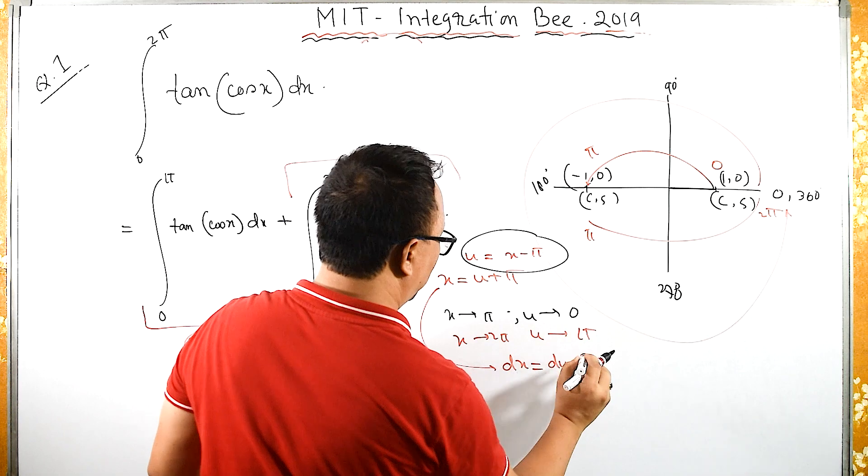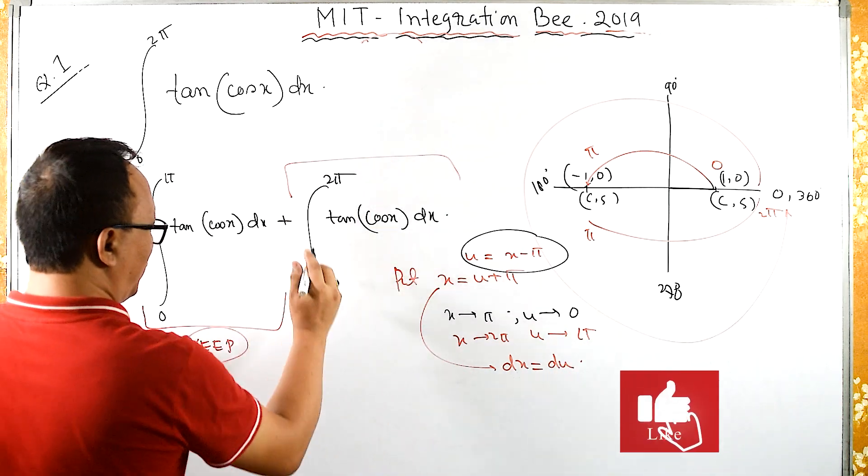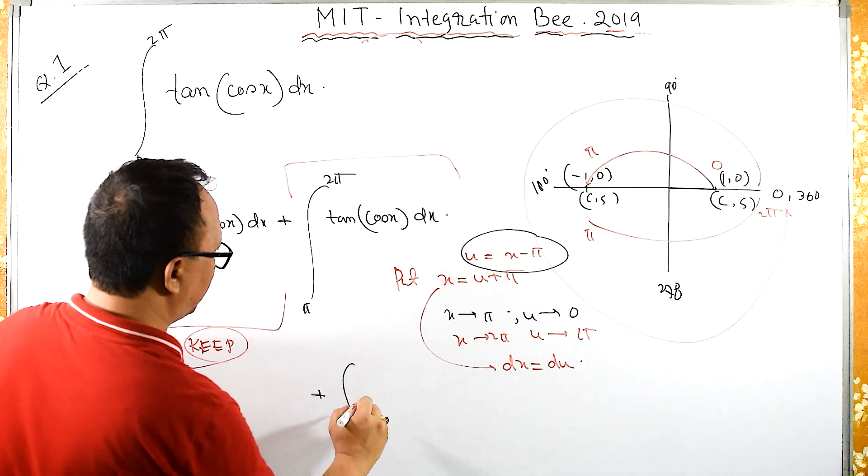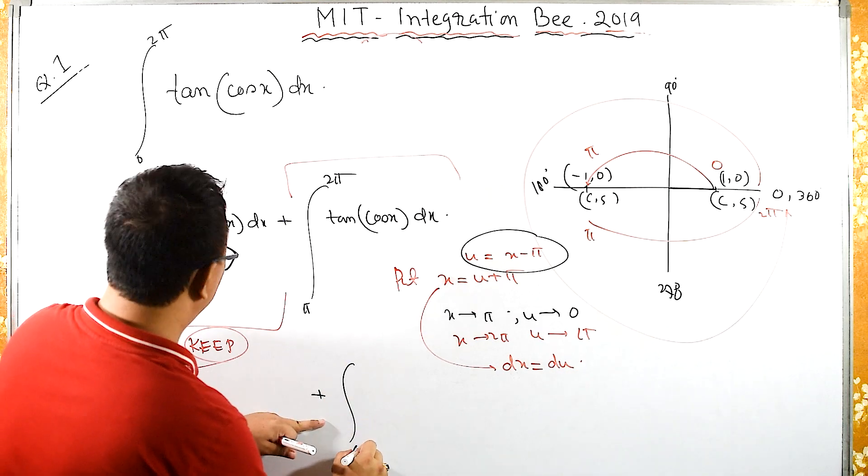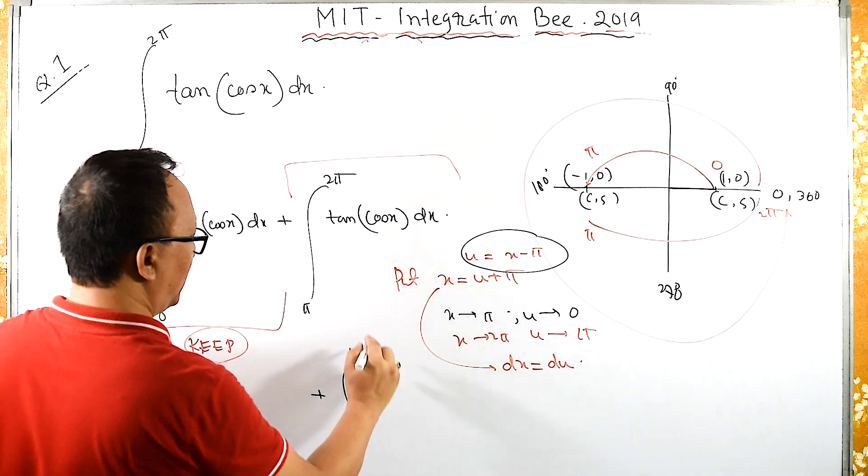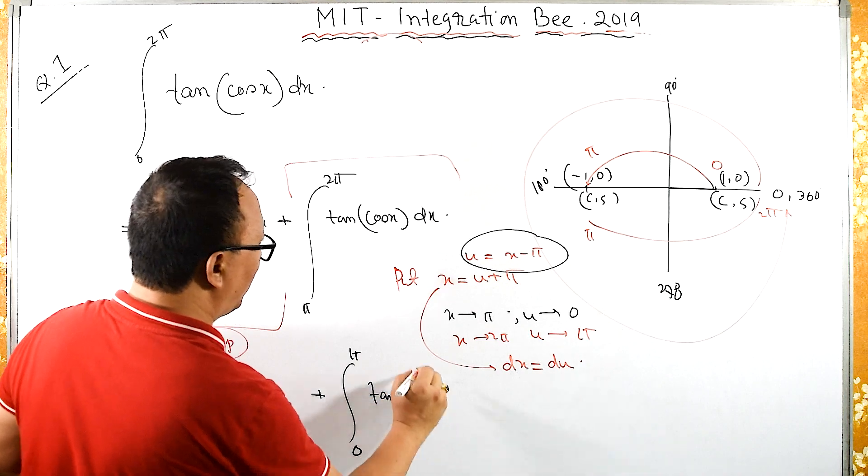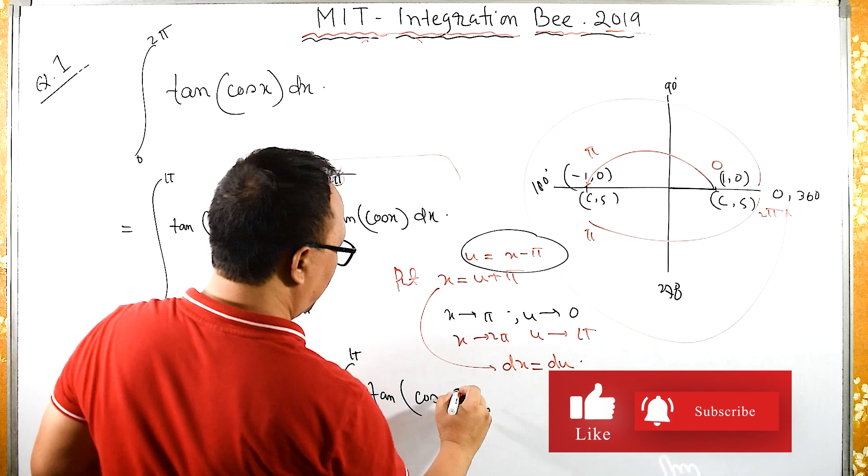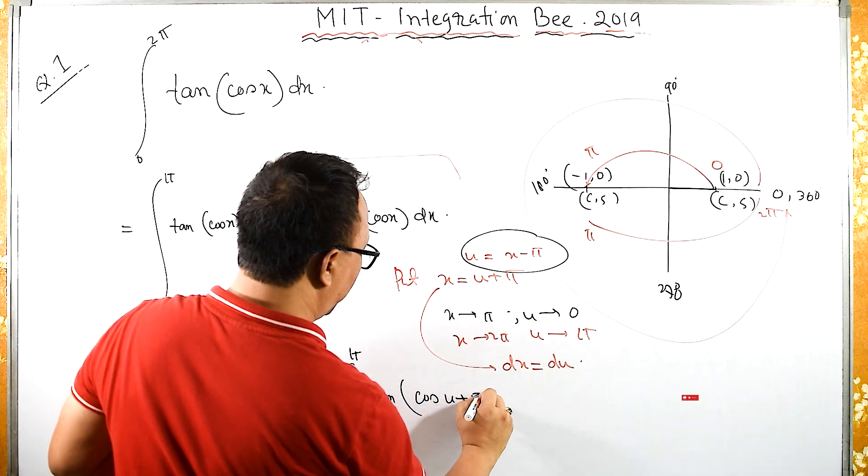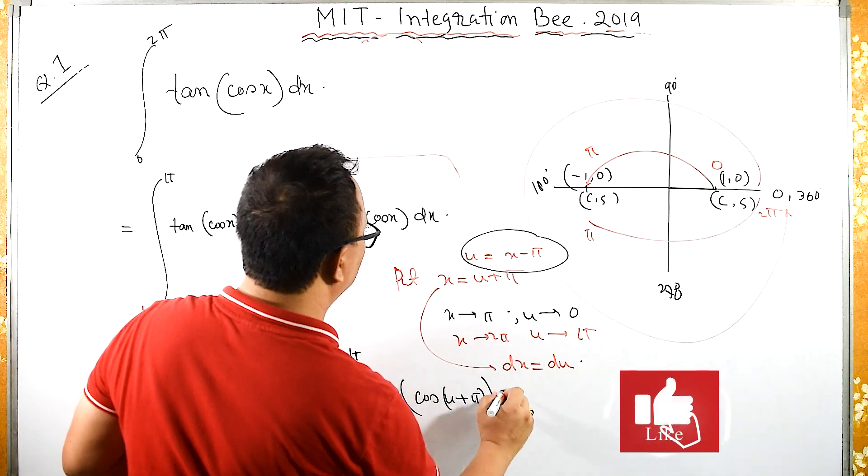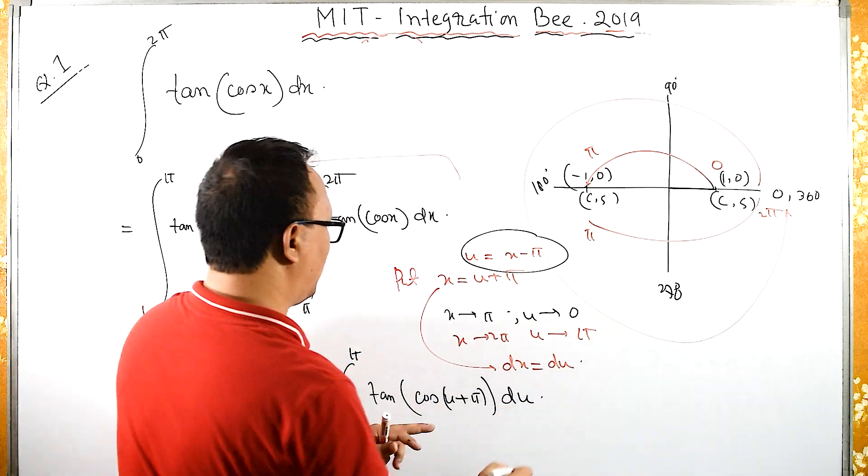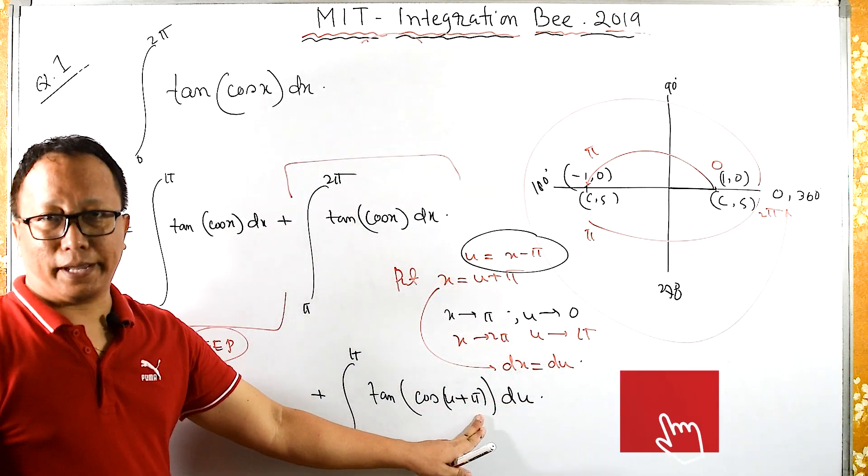Now let us differentiate: dx = du. Therefore, we have plus integral from 0 to π of tan(cos(u + π)) du. What is u + π, or π + u?